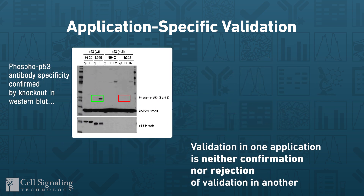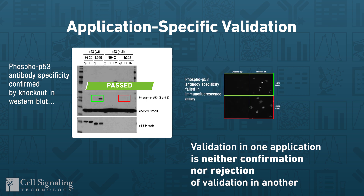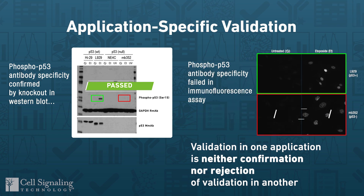For example, antibodies that pass Western blot validation using knockouts, CRISPR, or other models may fail to perform appropriately in immunocytochemistry assays or in other settings.